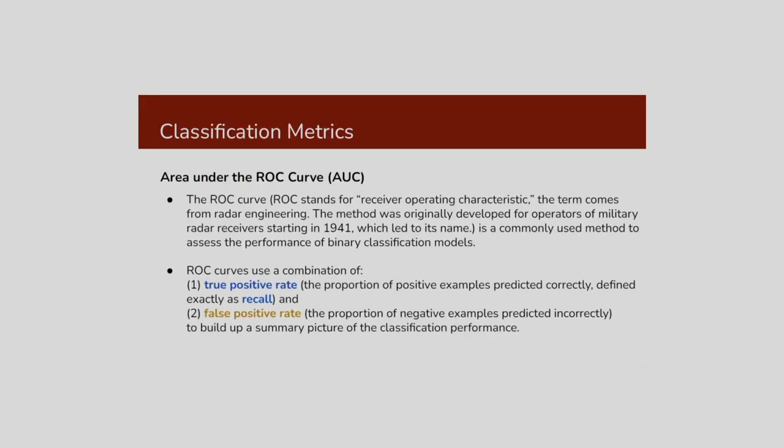After this I am considering another parameter — the area under the ROC curve. What is the ROC? ROC means receiver operating characteristics. This term comes from radar engineering. The ROC curve can be plotted from two parameters: the true positive rate, which is nothing but recall, and the false positive rate.